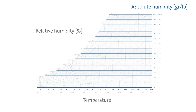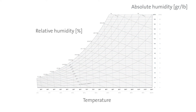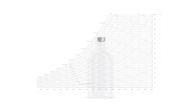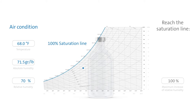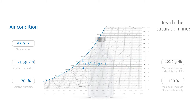So now, what can we say about an air condition with an established temperature, absolute humidity and relative humidity? Let's assume we have a flask containing air at 68 degrees Fahrenheit, 71.5 grams of water per pound of air, and 70% relative humidity. For a start, we know that the air is already very humid and can only absorb 30% more humidity. We also know that the air will reach the dew point line if absolute humidity increases by 31.4 grams of water per pound of air.